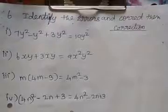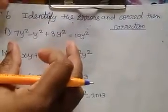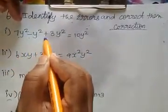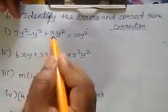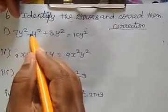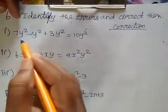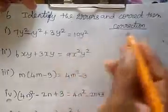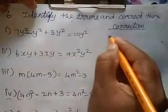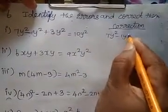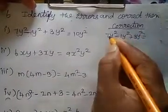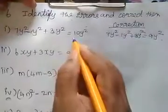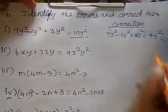Sixth sum: identify the errors and correct them. If we have 7 plus 3 is 10, 10 minus 1 is 9. So 7y squared minus 1y squared plus 3y squared: 7 plus 3 is 10, 10 minus 1 is 9. So 9y squared. The given answer is 10y squared — this is incorrect; the correct answer is 9y squared.